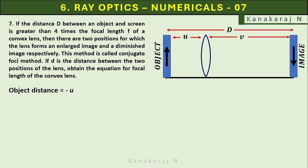Object distance is negative equals minus u, image distance is positive equals D minus u.